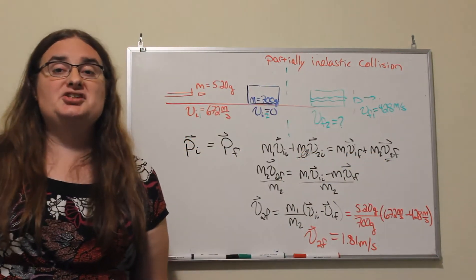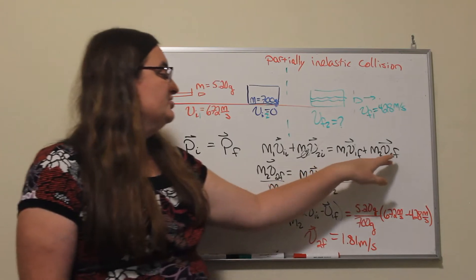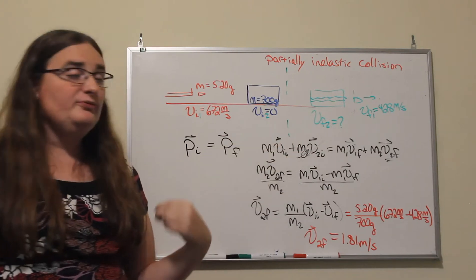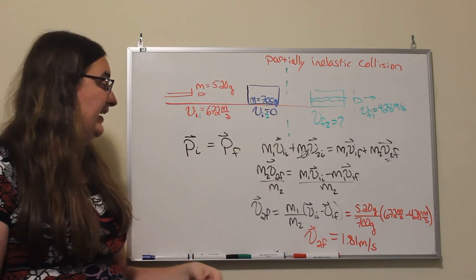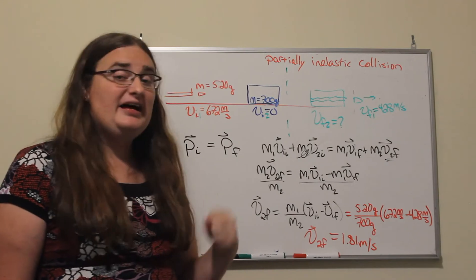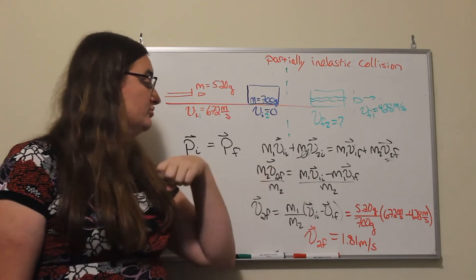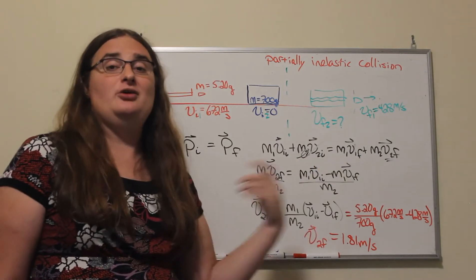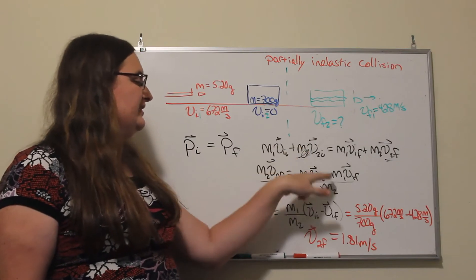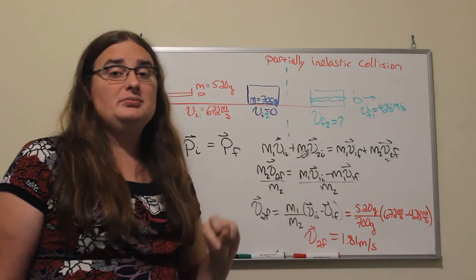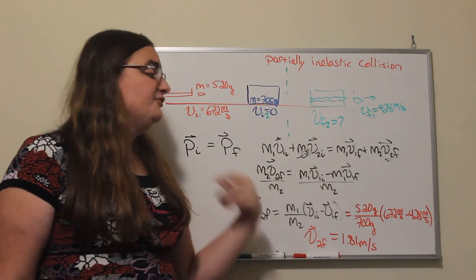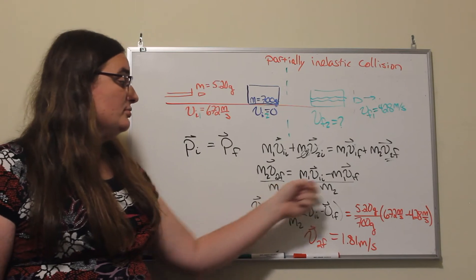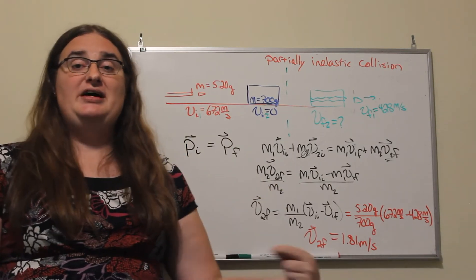If I want to solve for the final velocity of object two, I can subtract this final momentum from object one from the other side. So mass two times the final velocity of mass two is equal to mass one times v one initial minus v one final as a quantity, or I could think about this as the initial momentum of the projectile minus the final momentum of the projectile. To find the velocity of object two we would divide both sides by the mass of object two.